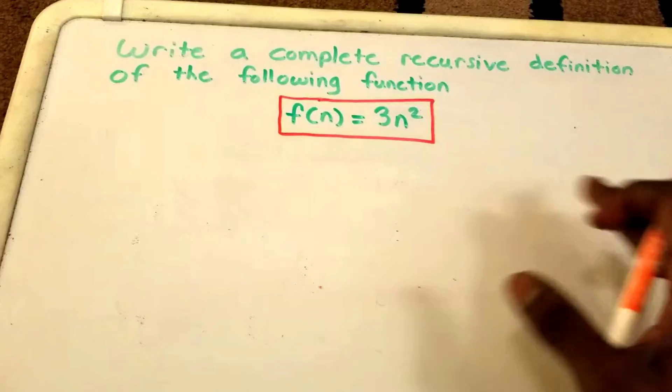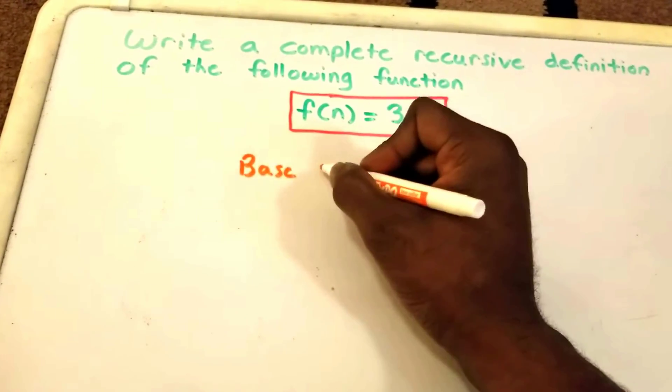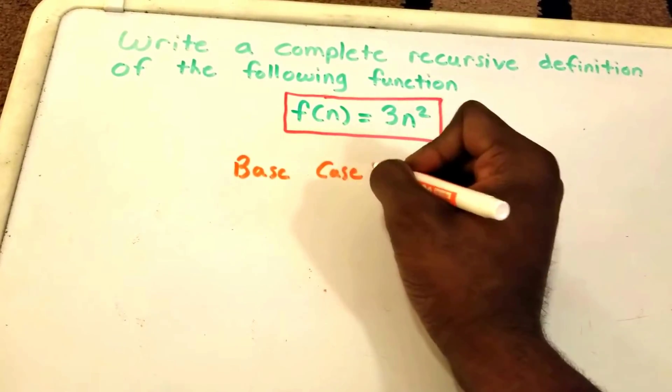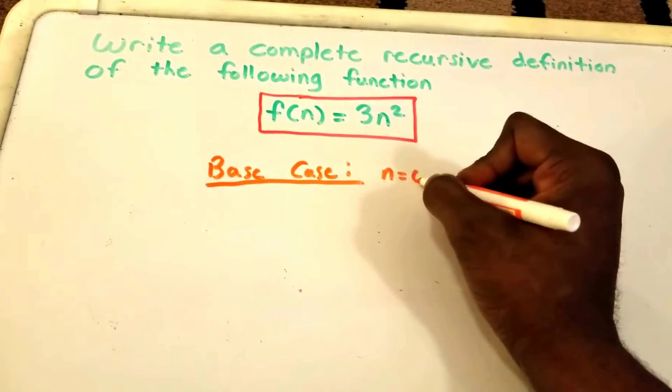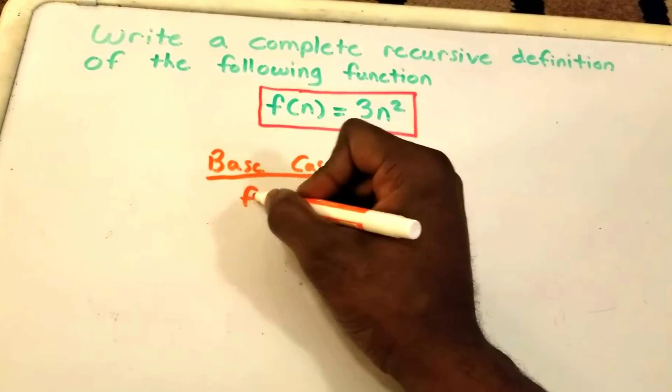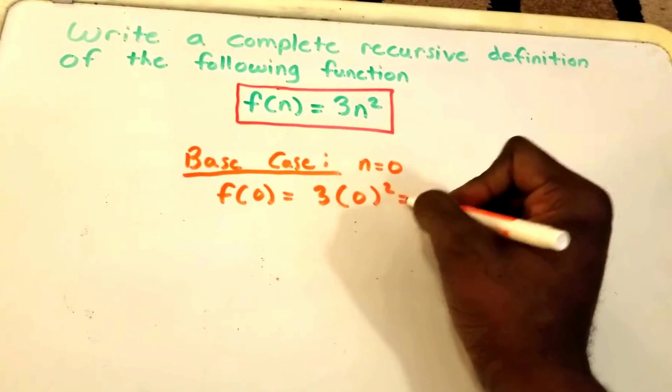So first we need to find our base case. Base case here. And our base case is going to be when n equals 0, so we get f(0) is equal to 3 times 0 squared, which equals 0.